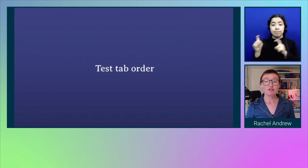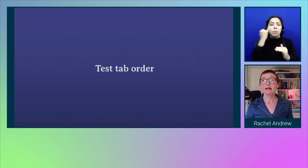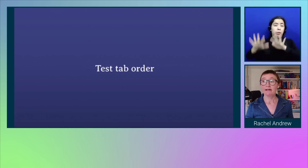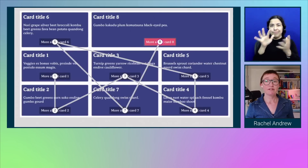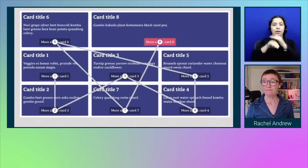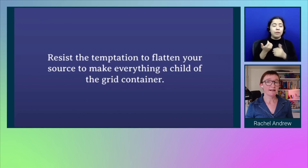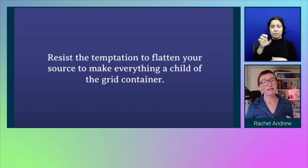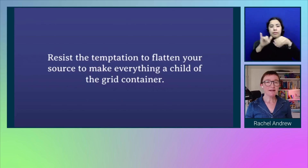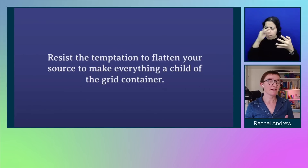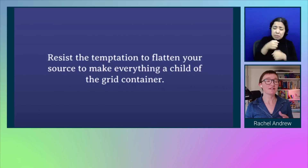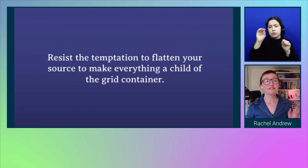Test the tab order. It's not just about screen readers — screen readers are going to read the document in the order that it is. But people who are navigating around with the keyboard are the people who are going to really experience this weird jumping about if you've got your tab order all mixed up. Here you can see the tab order of the demo I showed earlier and how someone is having to jump around all over to access all of the content. And resist the temptation to flatten out your source to make everything a child of the grid container — this is really important.